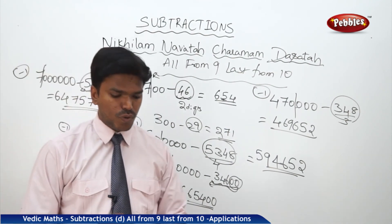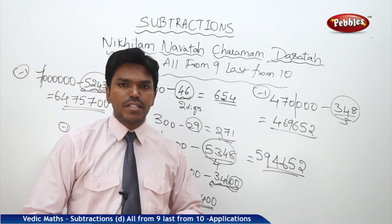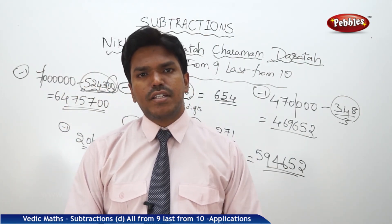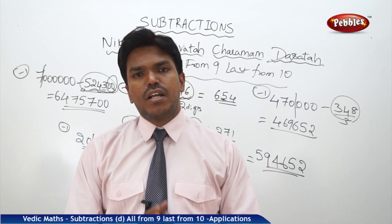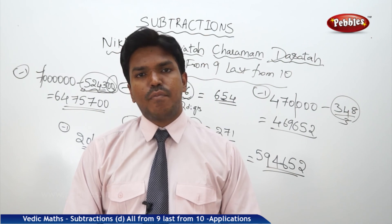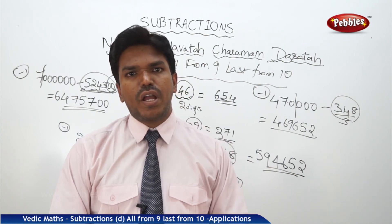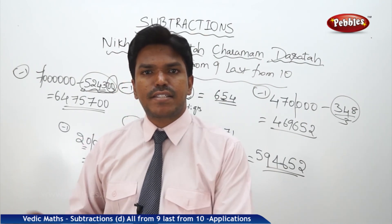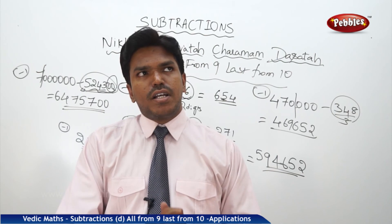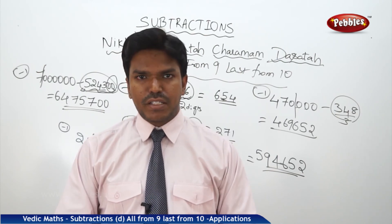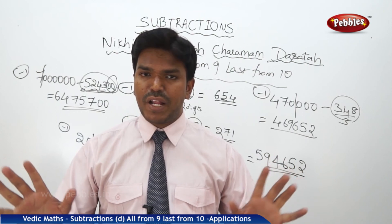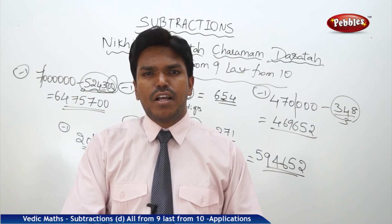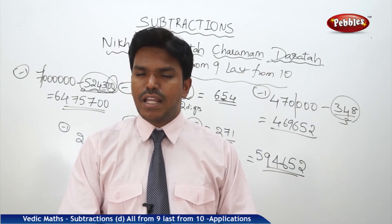So that's how, friends, we can do subtractions in an easy way — just by applying 'all from 9, last from 10,' the Nikhilam method, as well as complements, match and mismatch numbers. In all subtractions — Nikhilam method as well as match and mismatch method — we can very easily get the answers. From now onwards we don't have any fear of subtractions; we don't need to use fingers, no need for borrowing, no need for cutting. That's how we can do subtractions in an easier way.